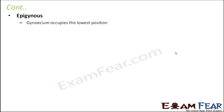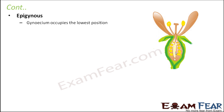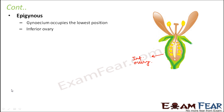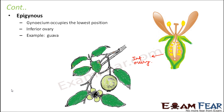The second type is epigynous, where the gynoecium occupies the lowest position — all other whorls are higher when compared to the gynoecium. In an epigynous flower, the ovary is at the bottom, so even the sepals lie above the ovary. The petals are above the ovary, and the stamens are also above the ovary. Only the gynoecium or the ovary lies at the bottom. So this is called an inferior ovary. An example of a plant with epigynous flowers is guava.